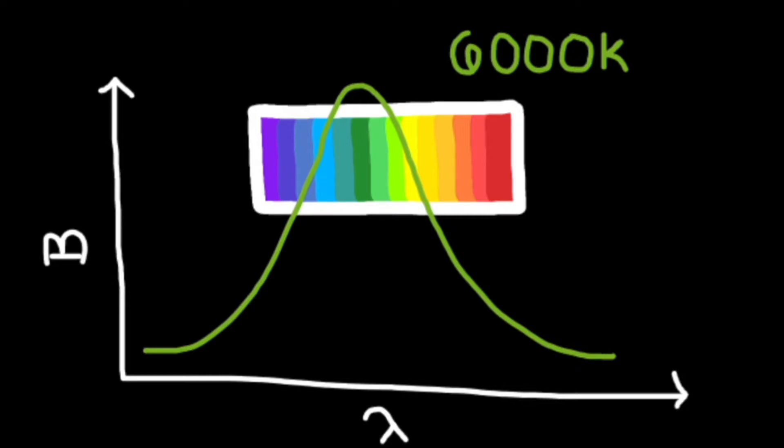peak in the green part of the visible spectrum. But we never see green stars when we look at the sky, otherwise the Sun would be green. Why is that?